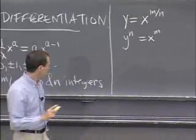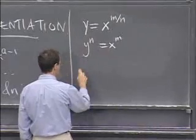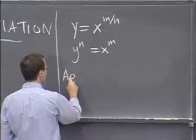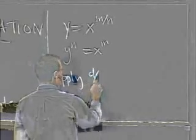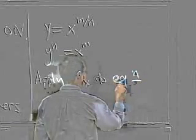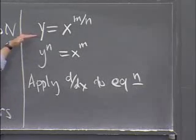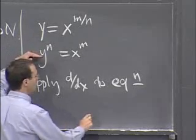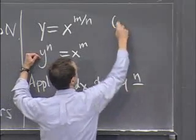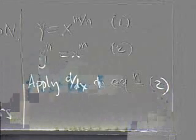And now what we're going to do is we're going to differentiate. So we're going to apply d by dx to the equation. Now, why is it that we can apply it to the second equation, not the first equation? So maybe I should call these equation 1 and equation 2. The point is that we can apply it to equation 2.